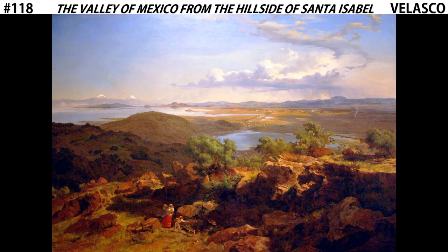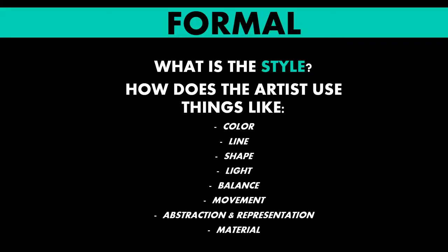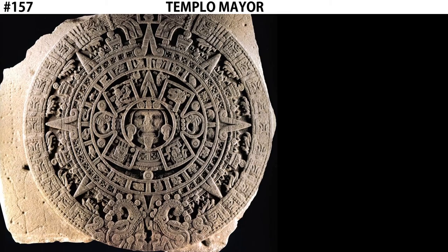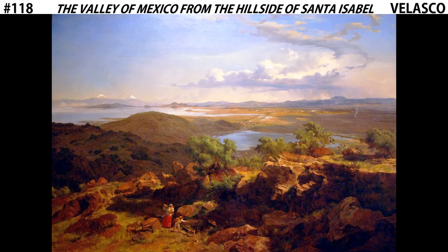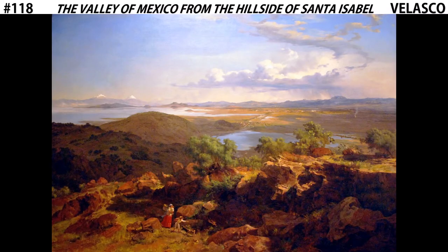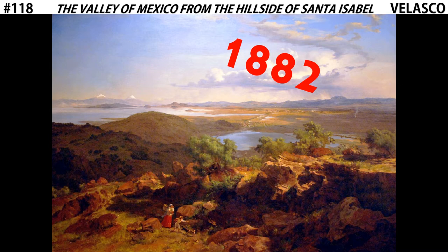Now let's start with the formal qualities. You might notice that this work looks very different than the other works we've been looking at in this chapter. The material used for this painting is oil on canvas, and the date on this work is 1882, which is relatively recent in terms of art history. This piece comes from the 19th century.